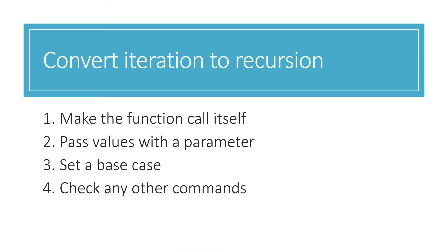This is my checklist for converting an iterative function into a recursive function. Because it's a recursive function, the function has to call itself, so I write that in somewhere. I make sure that I'm passing the values I need using one or more parameters, because that's the only way to pass the value along. I have to set a base case so that the recursion will stop. And I have to check that I've included any other commands from my original function. I'm going to go through that checklist now, and by the time I've completed those four tasks, I will have a recursive function that works.